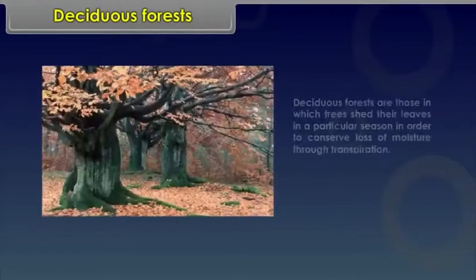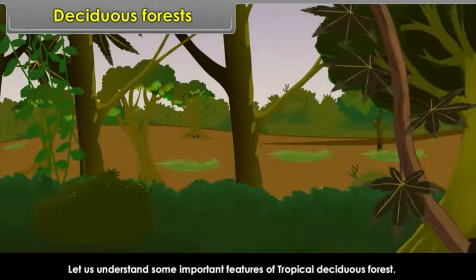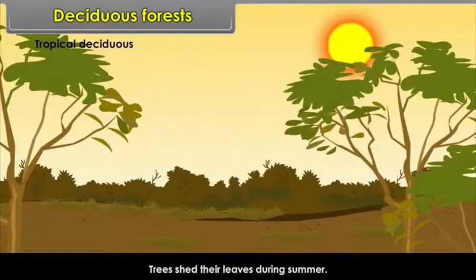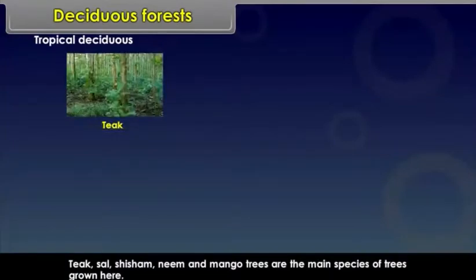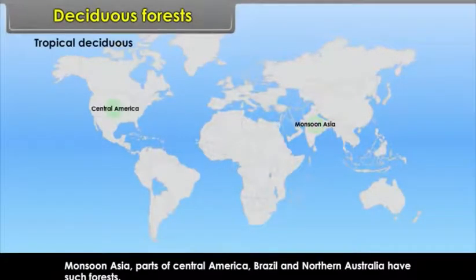Deciduous forests are those in which trees shed their leaves in a particular season in order to conserve loss of moisture through transpiration. Tropical deciduous forests are found in subtropical regions with a distinct dry season. Teak, Sal, Shisham, Neem and Mango trees are the main species grown here. Monsoon Asia, parts of Central America, Brazil and Northern Australia have such forests.